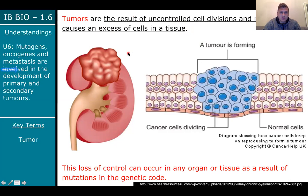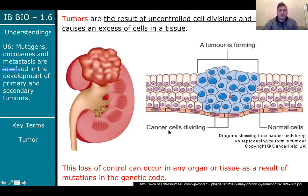Tumors form when something in the cell division messaging or machinery goes bad. This is a picture of a kidney model — that huge growth is uncontrolled cell division. At the cellular level, regular healthy cells are controlled and orderly; tumor cells are irregularly shaped, bigger, and lumpier — going crazy with uncontrolled division.